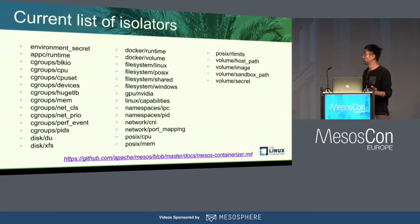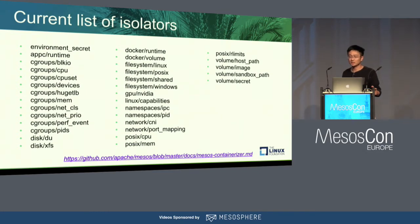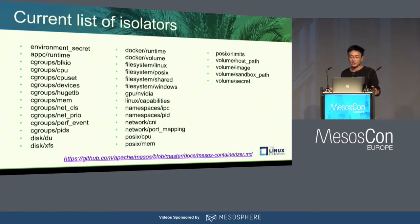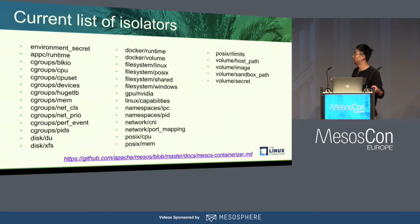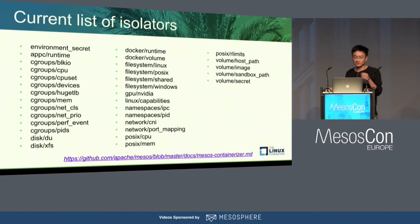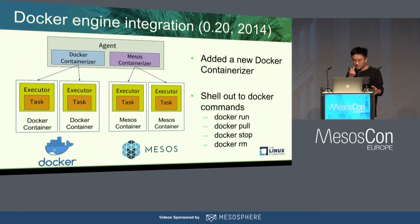A bunch of isolators were added later. If you go to the latest Mesos containerizer documentation, you can see the full list — cgroup subsystem support, disk isolators, file isolators, namespace isolators, networking and volumes. These are all documented individually. The architecture makes it very modular, and you can easily add new isolators.